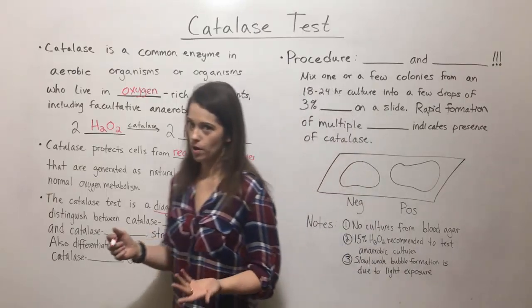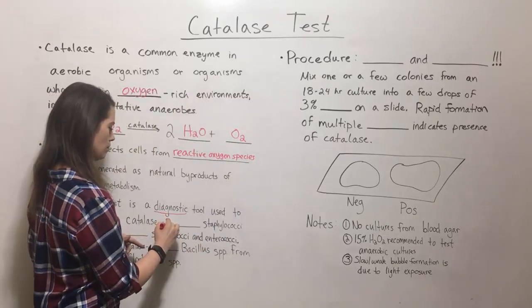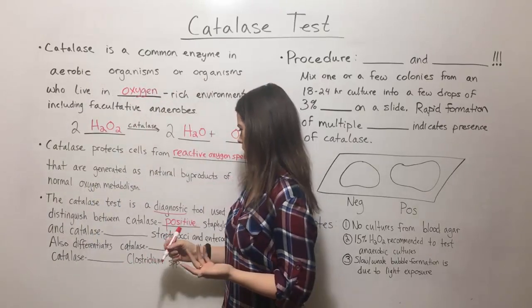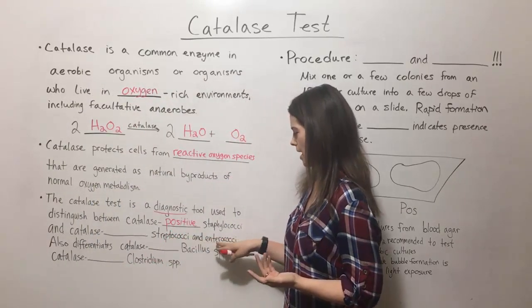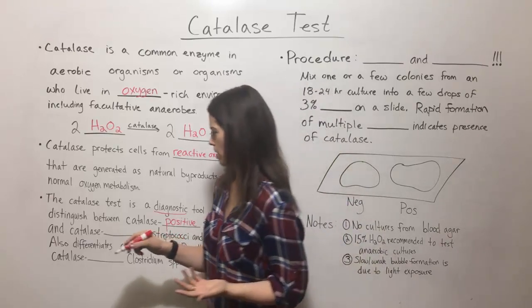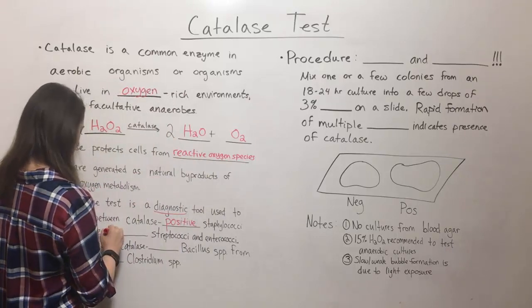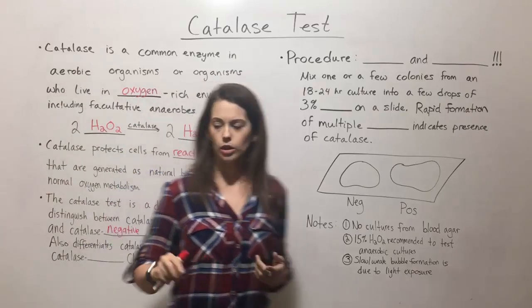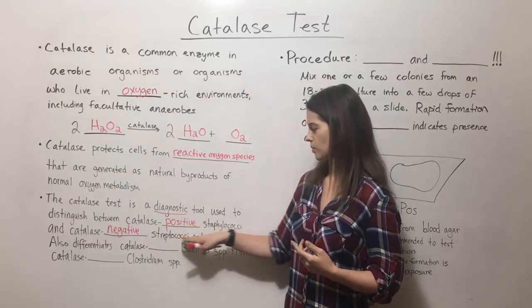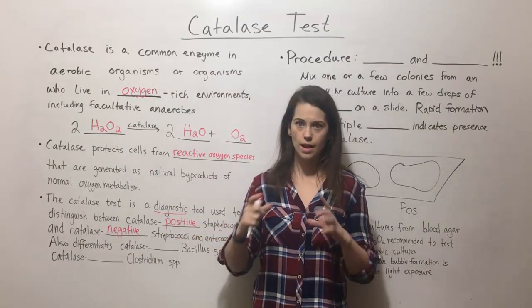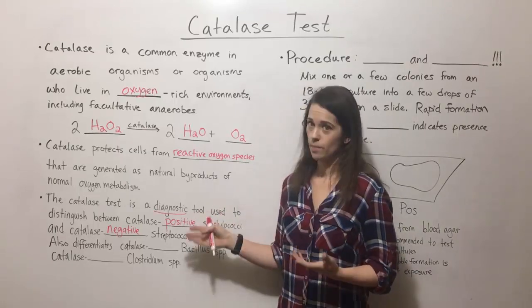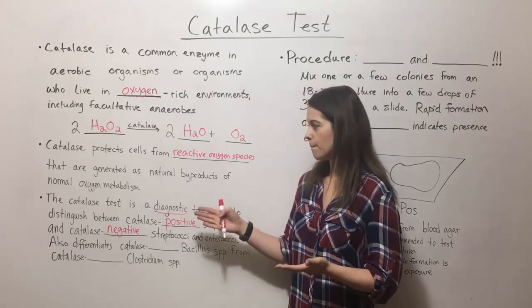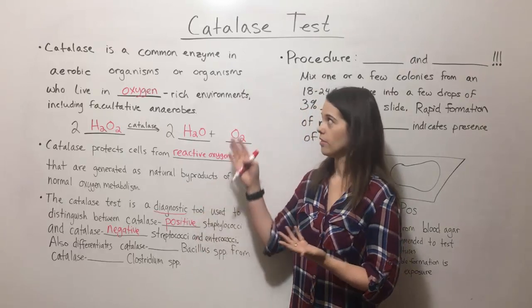For example, staphylococci, which are gram-positive, are catalase-positive — meaning they produce catalase. On the other hand, streptococci and enterococci, which are also gram-positive, are catalase-negative. Staphylococci, streptococci, and enterococci are all cocci, meaning they're round, and they're all gram-positive, which makes them difficult to distinguish even with a gram stain, but they can be distinguished with the catalase test.